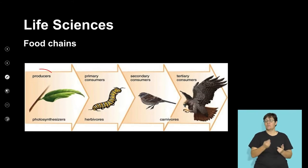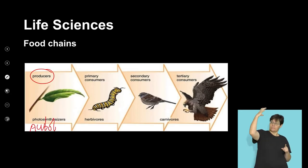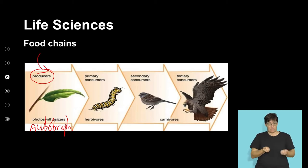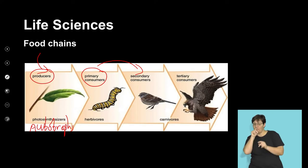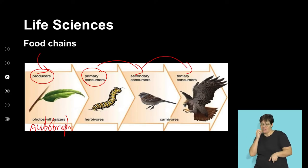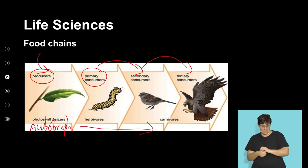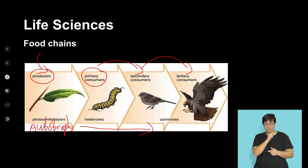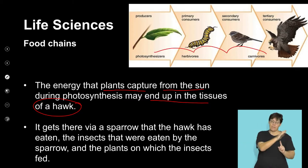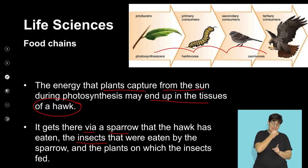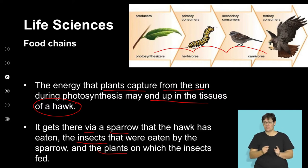Autotrophs that photosynthesize are our producers, which provide energy for primary consumers, who are in turn consumed by secondary consumers, who in turn are a source of food for tertiary consumers. The flow of energy is unidirectional, with different levels of organization consuming different amounts of energy. For example, the energy that plants capture from the sun during photosynthesis may end up in the tissues of a hawk, via a sparrow that consumed an insect that consumed the plants.